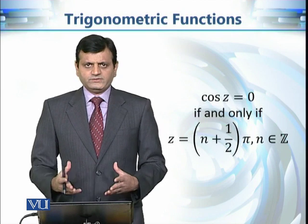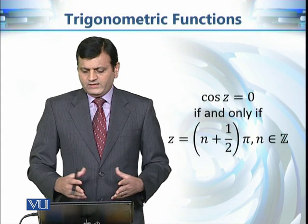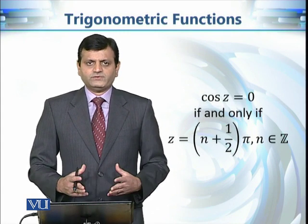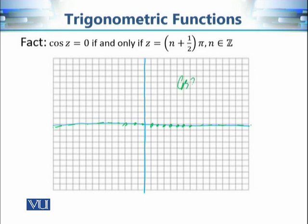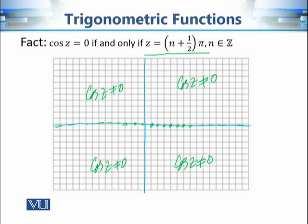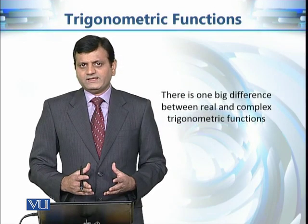For the cosine function: cos(z) = 0 if and only if z = (n + 1/2)π for integer n — exactly the same as in the real case. The proof is very similar and is left as an exercise. Looking at these zeros on the complex plane, they all lie on the real axis, and cosine is never zero at any other point.